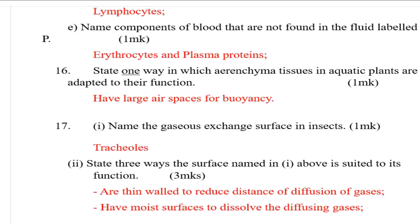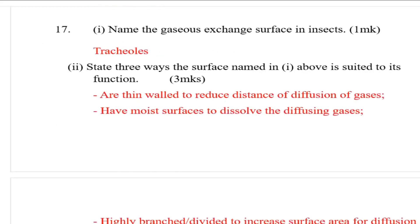Number 16: State one way in which the aerenchyma tissue in aquatic plants is adapted to its function. They have large air spaces for buoyancy so that they can float.